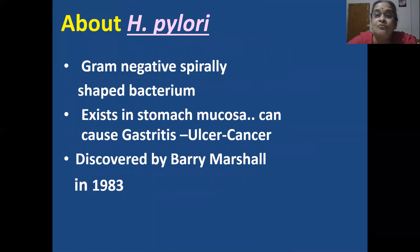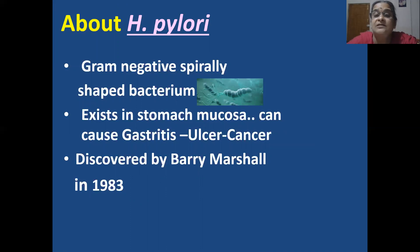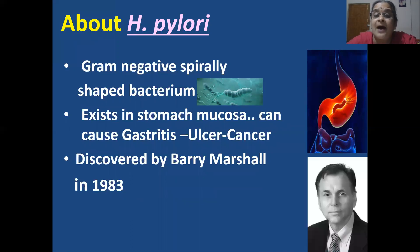About H. pylori: it is a gram-negative, spirally shaped bacterium. It exists in the stomach mucosa and can cause gastritis, which can lead to ulcers, and in very few cases it can turn out to become cancer, which is more serious. It was discovered by Dr. Barry Marshall in 1983.